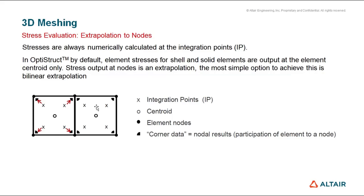Last but not least, I want stress and strain results. I tick here location — I want it at the corner. The reason for having stress and strain results at the corner is: stresses are always numerically calculated at the integration points. In OptiStruct, by default, element stresses for shell and solid elements are output at the element centroid only — so only one stress value for linear elements at this centroid point. If you want stress output at the nodes, for solid elements we have to extrapolate those values from the centroid, which is done by bilinear extrapolation.